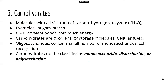First we're going to look at carbohydrates. Carbohydrates have this special chemical formula where the carbon to hydrogen to oxygen ratio is 1 to 2 to 1. So normally you can write the chemical formula for carbohydrates as (CH₂O)n, where N could be any number.